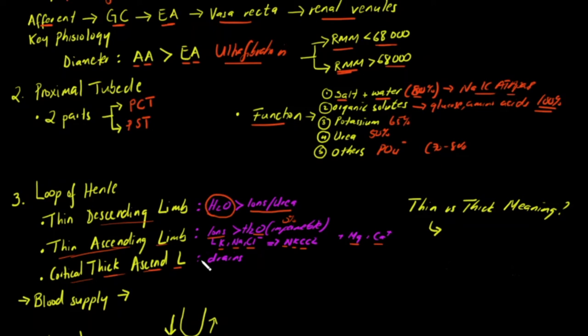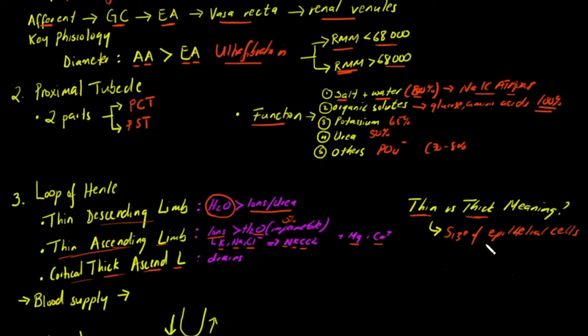The cortical thick ascending limb's main function is to drain urine into the distal convoluted tubule, since that is where it is connected. A common misconception: thin and thick do not refer to the actual size of the lumen, but rather to the size of the epithelial cells. The tissue type of the loop of Henle is typically simple squamous epithelium.